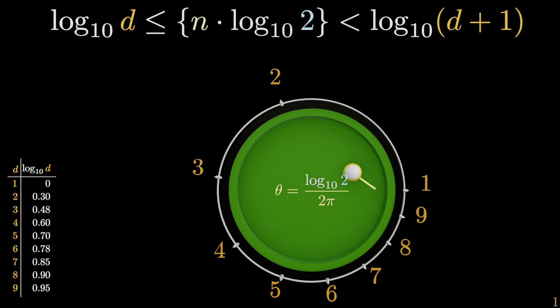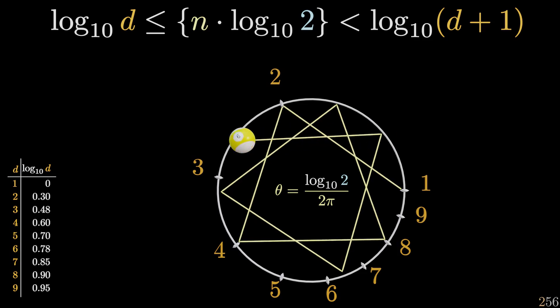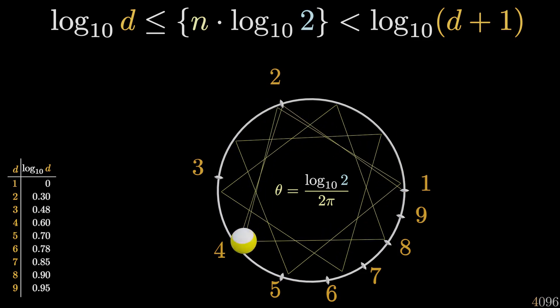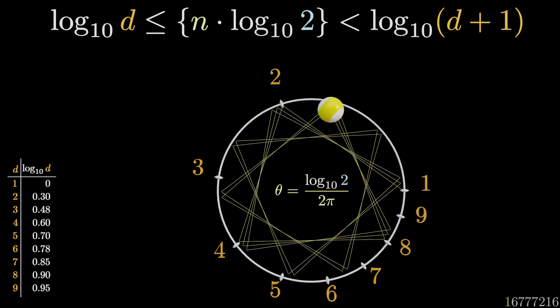We start at 1, hit the wall at 2, then at 4, then at 8, then at 16 and so on. The logarithm magic has turned this exponentially growing sequence into a billiard ball on a divine trajectory. Number theory again is turned into geometry.